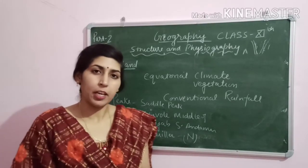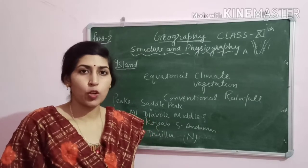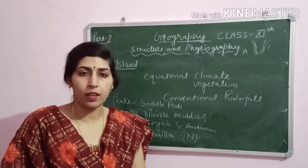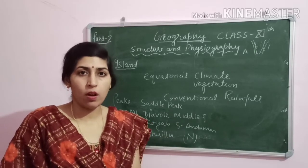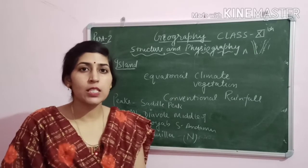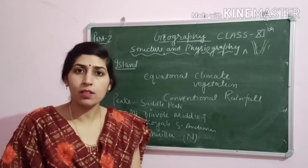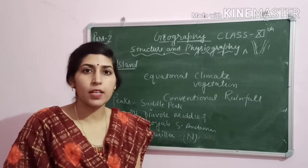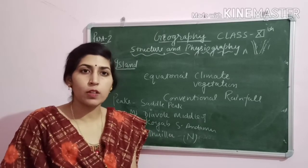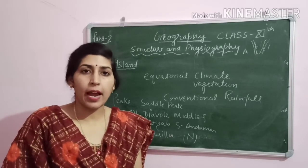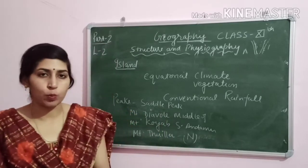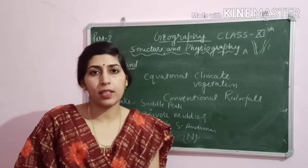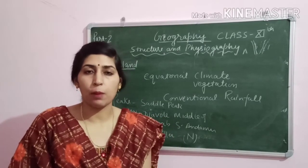So students, here we complete our chapter on the Physiography of India. We have read all physiographic divisions: first, the northern and northeastern mountains; second, the Ganga, Brahmaputra, and Indus plains; third, the Peninsular Plateau; fourth, the Thar Desert; fifth, coastal plains; and sixth, island groups. Make sure to practice this chapter with the help of a map, and read the chapter from your NCERT book to learn all region names and peak names.